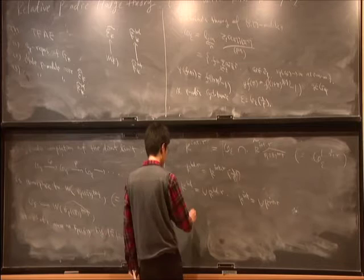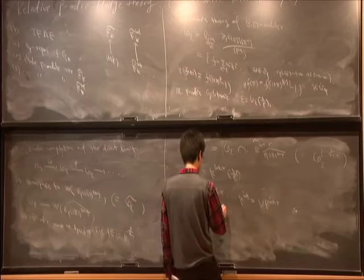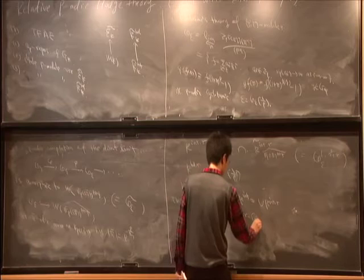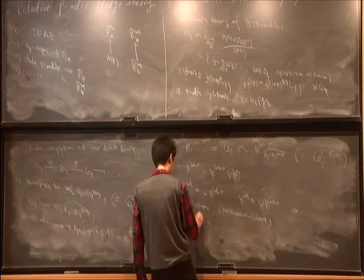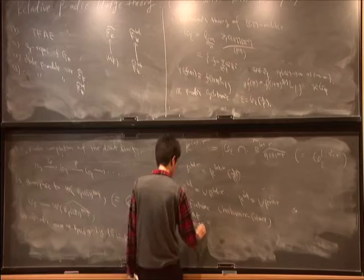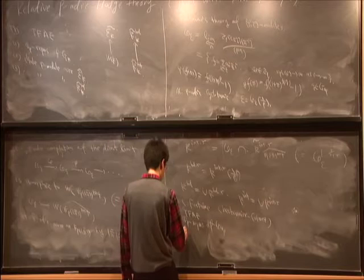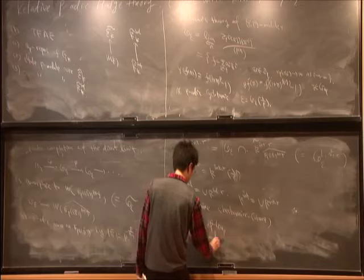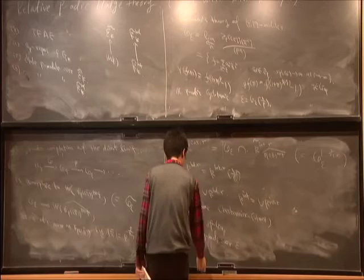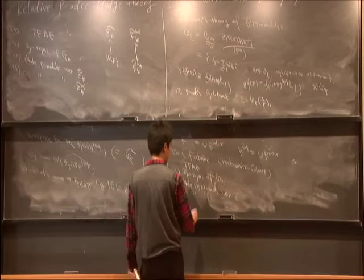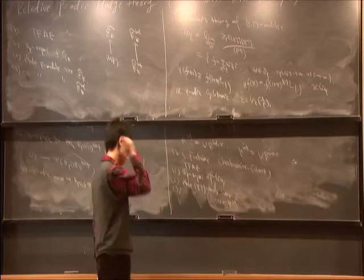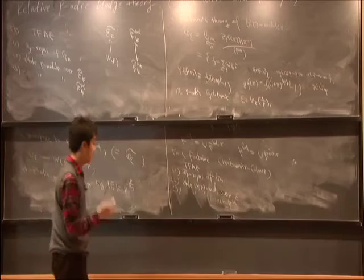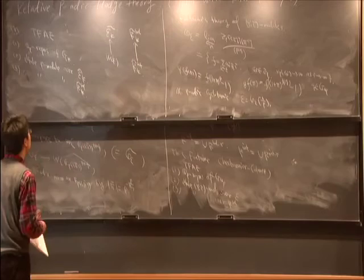We have the basic theorem of phi-modules due to Fontaine. There is an equivalence of categories between QP representations of GQP, E-tau phi-modules over E, and E-tau phi-modules over RBD. This is also mentioned in the lectures; however, the proof is completely non-trivial and we need something more.